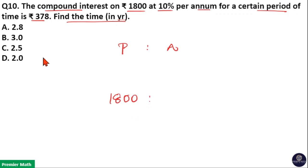We know compound interest is 378 for a certain time period, so add 378 to principal. Now 1800 plus 378 equals 2178, which is the amount for a certain time period. Now take the ratio between these two.